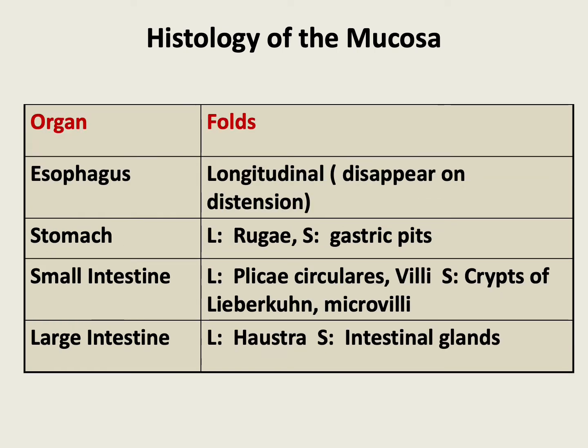Folds of the mucosa in the esophagus are seen with the naked eye as longitudinal folds, and these folds disappear on distension. Whereas in the stomach, these folds are seen as rugae and gastric pits. In the small intestine, these folds are present in the form of plicae circularis and villi, with smaller folds in the form of crypts of Lieberkühn and microvilli. Whereas in the large intestine, we see the haustra and the intestinal glands.